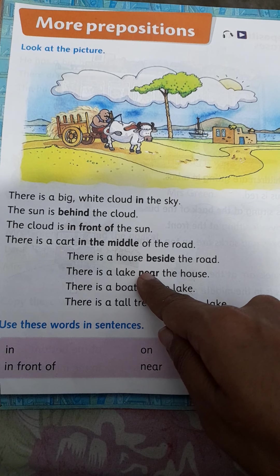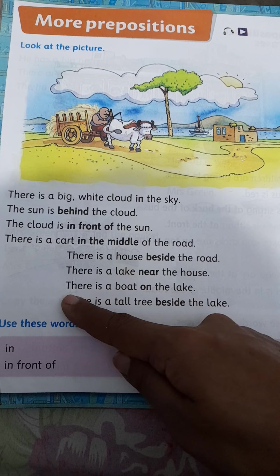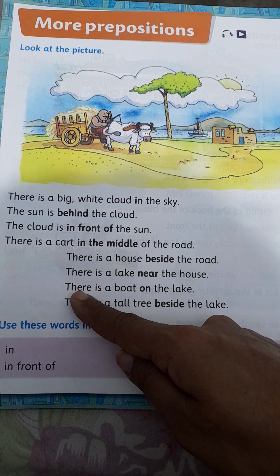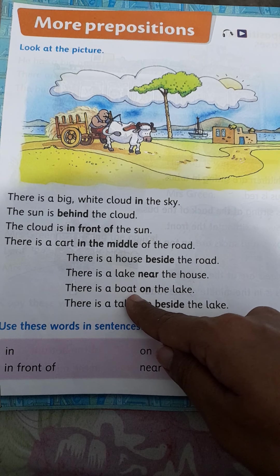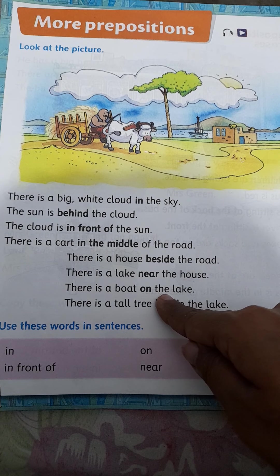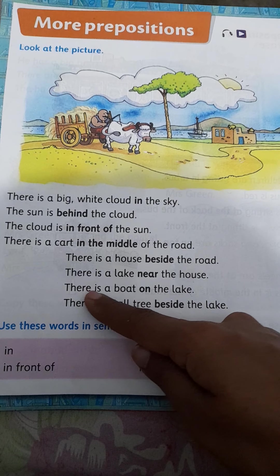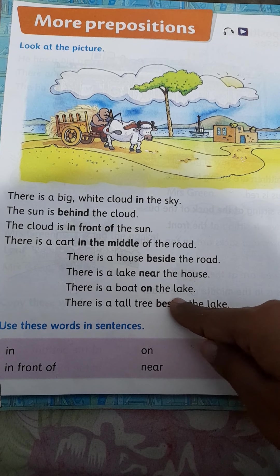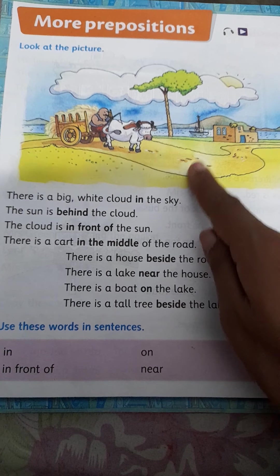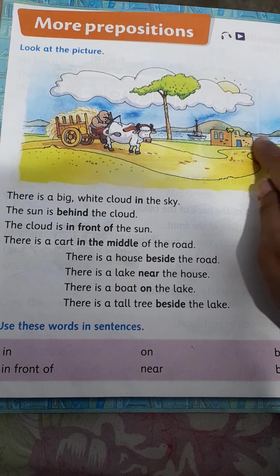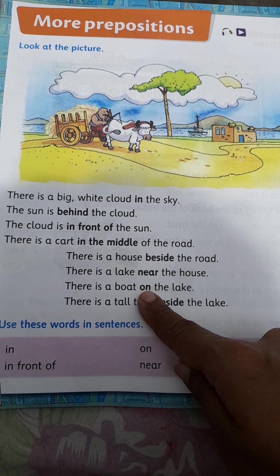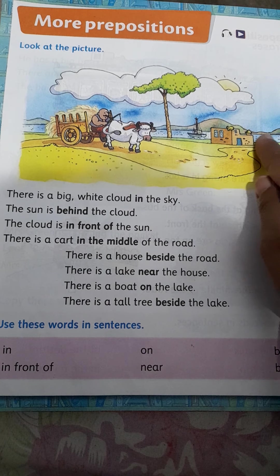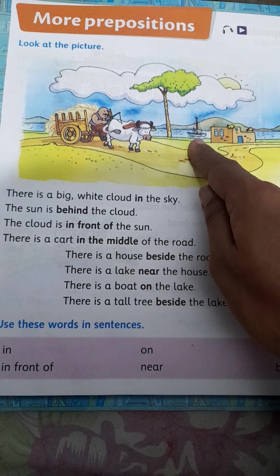T-H-E-R-E there, I-S is, a B-O-A-T boat, on the L-A-K-E lake. There is a boat on the lake. Is lake par, is jheel par. On means par, upar. Is jheel ke oopar boat hai.